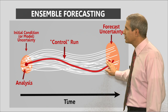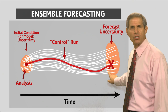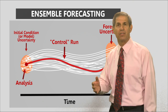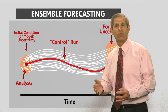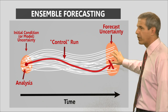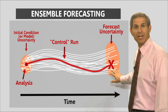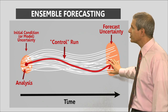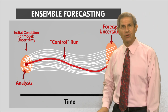If they all end up close to the original forecast, that gives us confidence that the forecast isn't sensitive to the imperfections in the initial conditions or the model. But more often than not, the forecast will be spread out, giving us a sense of the range of solutions and a measure of the uncertainty.